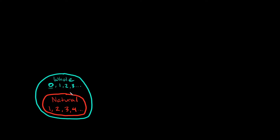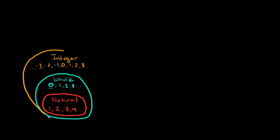After whole numbers are integers. An integer includes everything that's in the natural numbers and whole numbers — so 0, 1, 2, 3 and so on — but it also includes the negative numbers: negative 1, negative 2, negative 3, and so on. So those are what integers are — they're basically the third smallest classification.